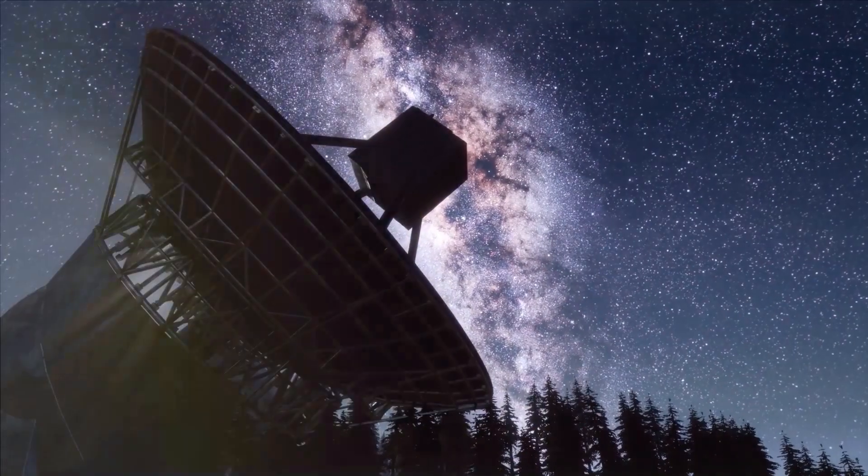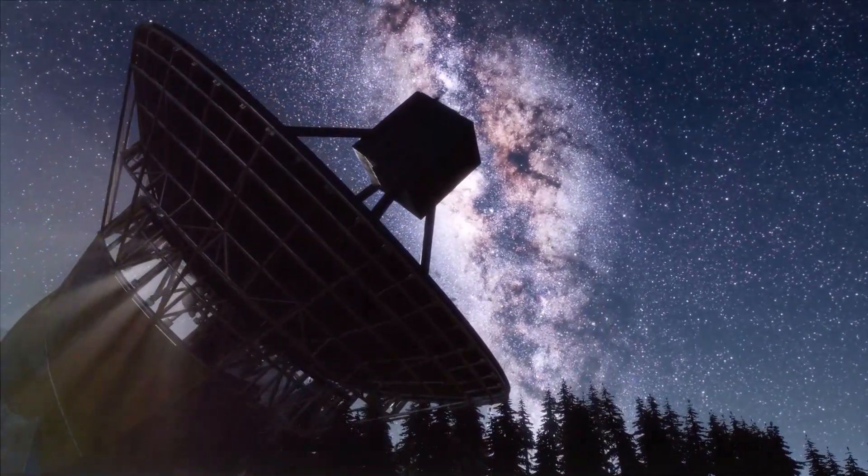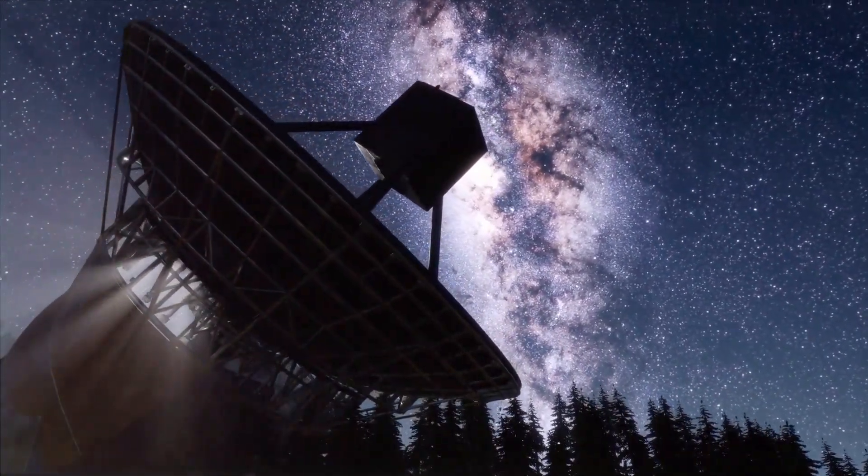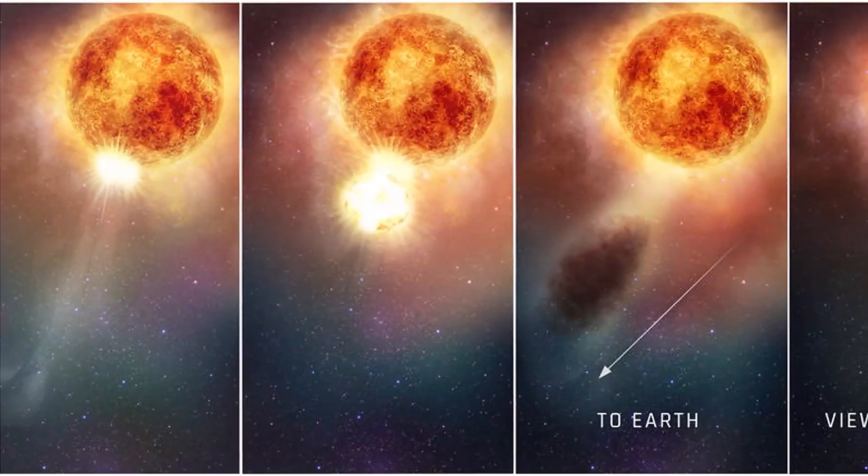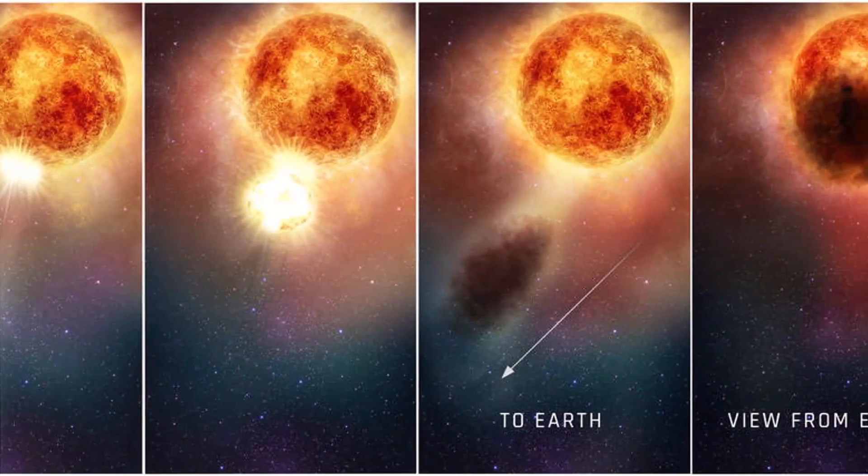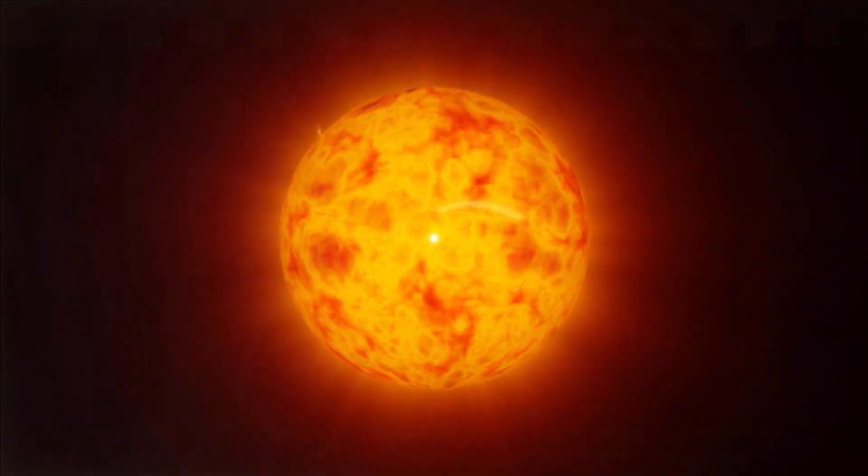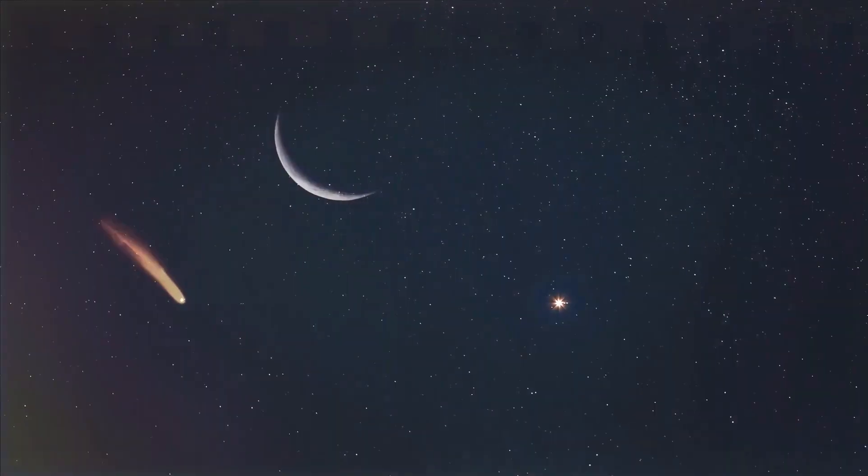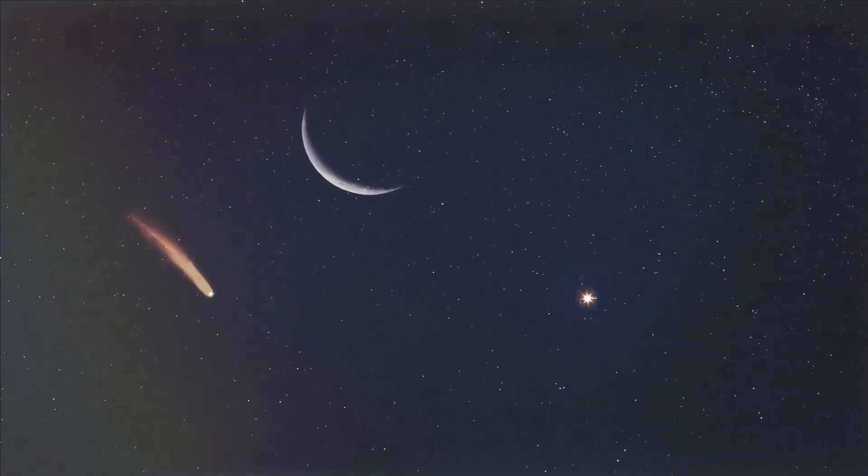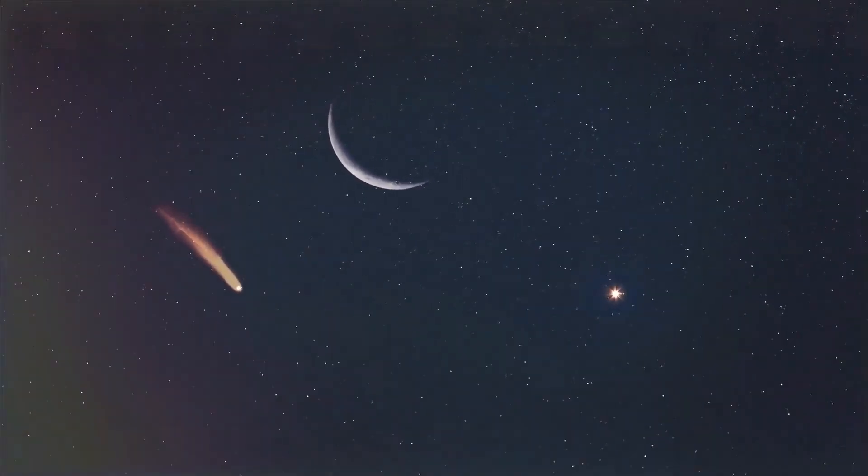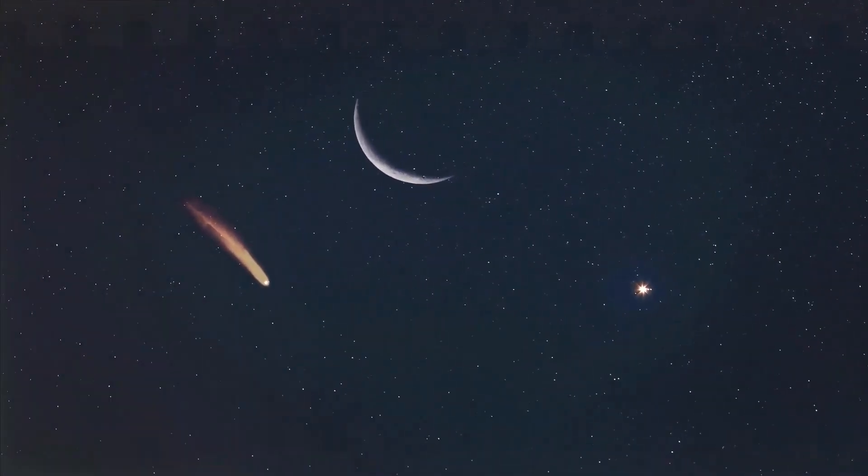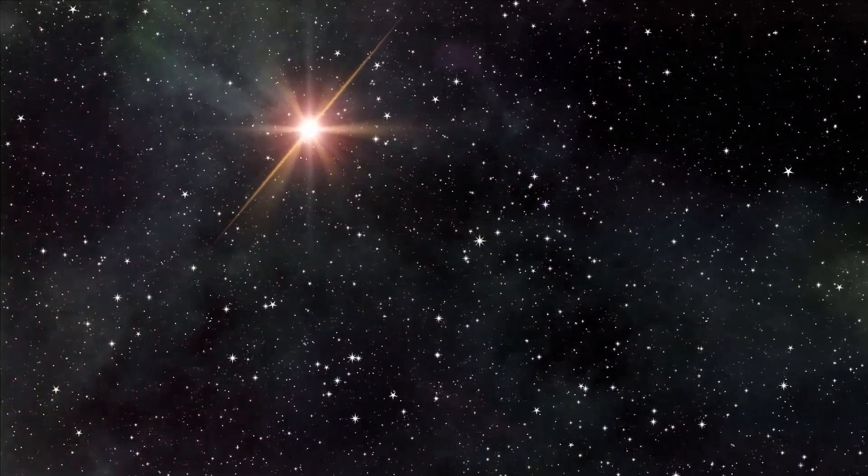There is a possibility that the supernova will produce a gamma ray burst, which is an extremely powerful burst of energy that could be dangerous for life on Earth, if it were to occur in our galaxy. While the Betelgeuse supernova is still a hypothetical event, astronomers are excited about the prospect of studying this event when and if it occurs. The data gathered from a Betelgeuse supernova could provide valuable insights into the inner workings of stars and the formation of elements in the universe.